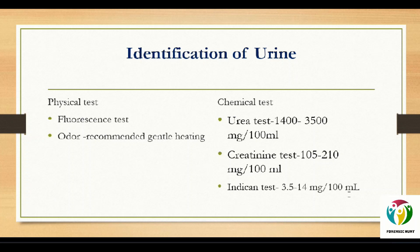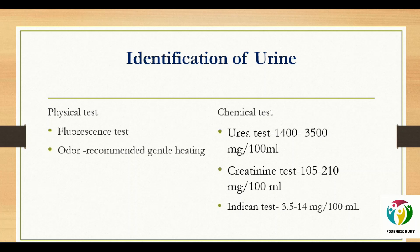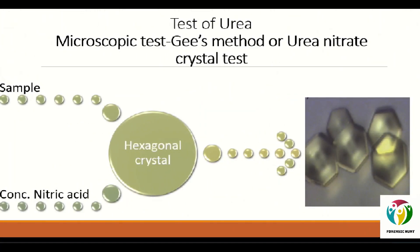These compounds are also present in other body fluids like sweat, blood, saliva, and semen, but their concentration is quite low compared to urine. Now I'll cover all the tests that can be done for the examination of urea, creatinine, and indican in urine. The first test is for urea. Urea is a carbamide discovered in 1773 and synthesized in 1828.